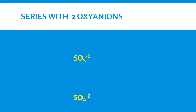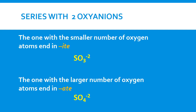When we look at a series with two oxyanions, how do we name them? Looking at SO3²⁻ and SO4²⁻, we notice they both have sulfur and oxygen. The first has three oxygen atoms and the second has four. The one with the smaller number of oxygen atoms ends with the suffix -ite, so we call this sulfite. The one with the larger number of oxygen atoms ends with -ate, so we call that sulfate. We take the root of the element name and add either -ite or -ate.